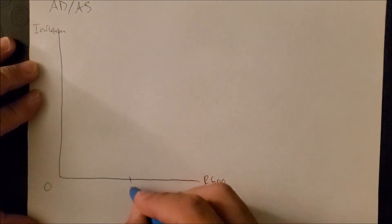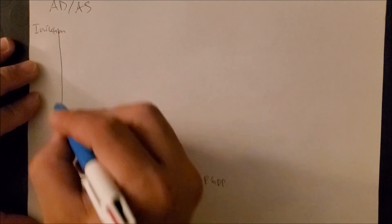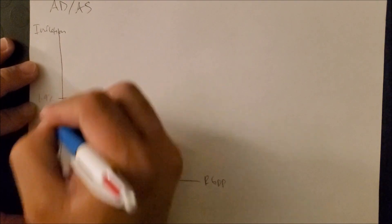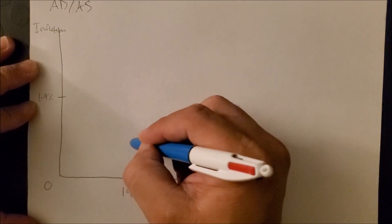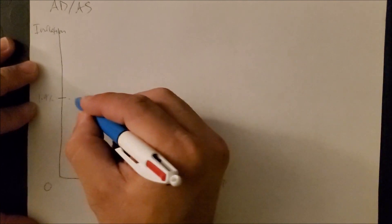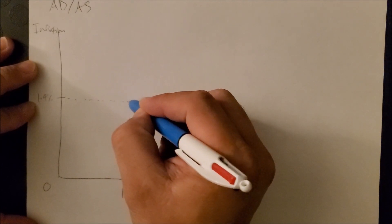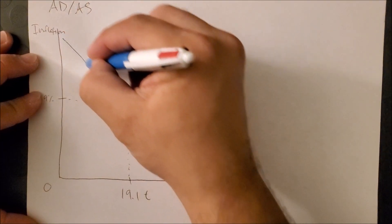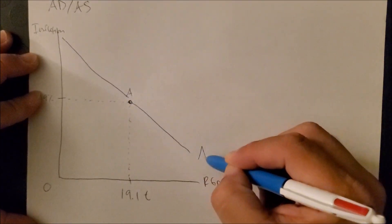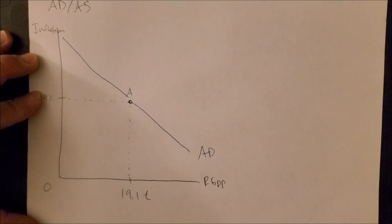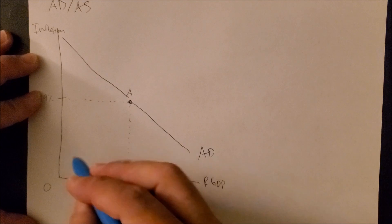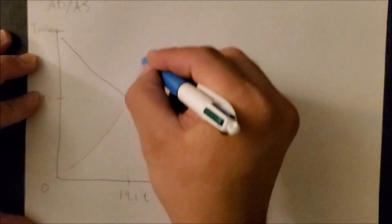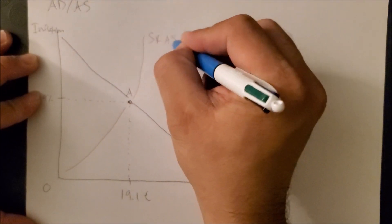We are using 19.1 trillion dollars and 1.9% inflation to give us point A, our equilibrium point. So once we have point A, we can then draw our downward sloping AD curve, as such, and our upward sloping short-run AS curve.